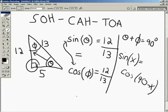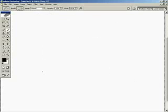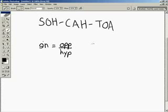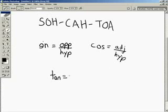So, there's one other thing I'd like to point out before we move on. SOH-CAH-TOA. Okay, so, sine equals opposite over hypotenuse. Cosine equals adjacent over hypotenuse. Tangent equals opposite over adjacent.